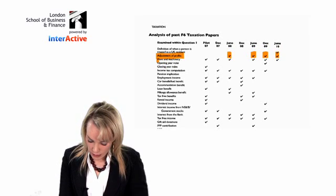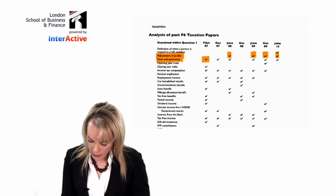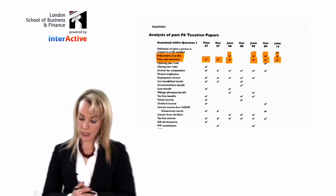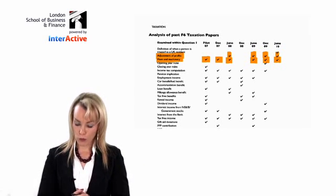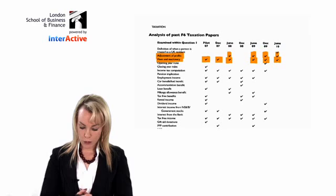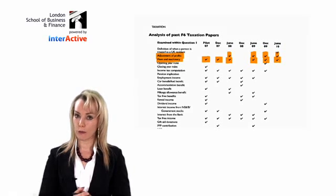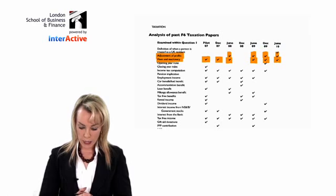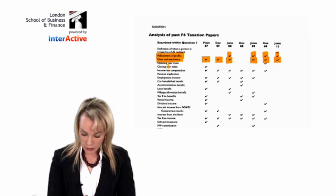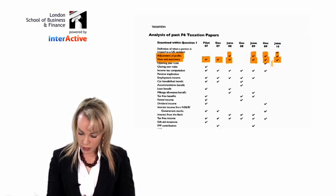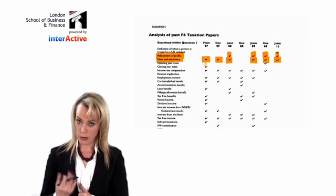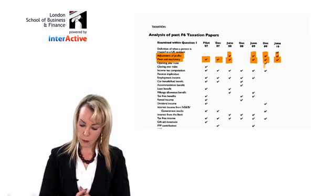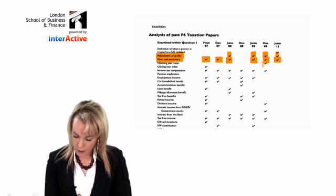Plant and machinery capital allowances is another very commonly tested exam topic — you can see it coming up right across the board. For self-employed individuals, one of the rules you have to learn is called the opening and closing year rules. The opening year rules in question one are not that popular — they came up in December 09.